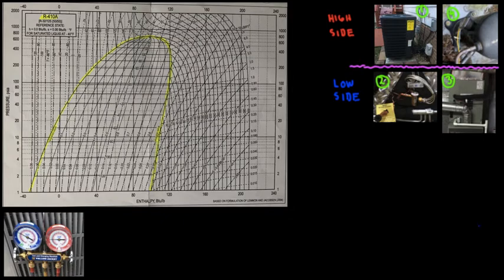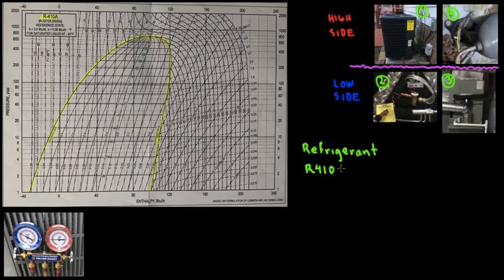Now let's get into what the low side and high side really mean. We need to understand the refrigerant — the working fluid — which in this case is going to be R410A. There are other types of refrigerants like R134A and ammonia, but we're using the most common one, which is used in residential home systems.